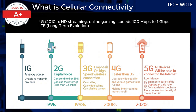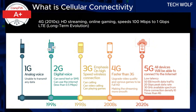4G, or fourth generation networks, launched in the late 2000s, brought mobile internet speeds comparable to broadband, enabling high-definition video streaming, online gaming, and more advanced mobile applications. The most common 4G standard is LTE (Long-Term Evolution). Speeds for 4G ranged from 100 megabits per second to 1 gigabit per second, depending on the network. This marked a huge leap in performance, allowing for smooth streaming, fast downloads, and higher network capacity for more users.